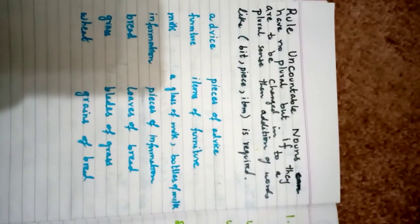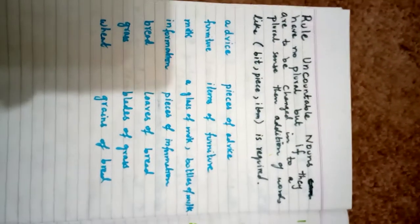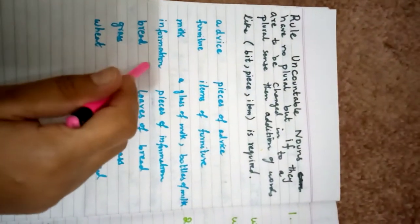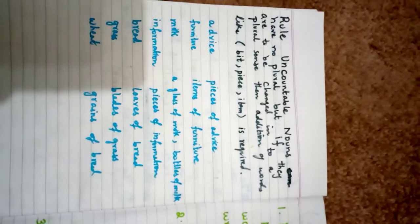He bought many furnitures - this will be wrong. Milk: bring me a glass of milk, or he bought many bottles of milk. So milk cannot become milks - it's an uncountable noun. Informations is wrong. He gave me many pieces of information is correct.